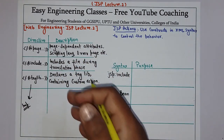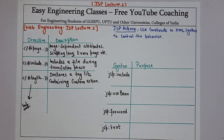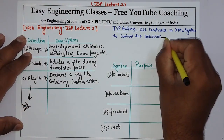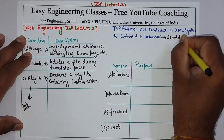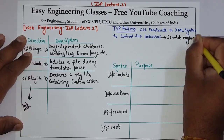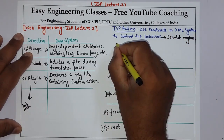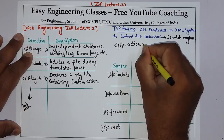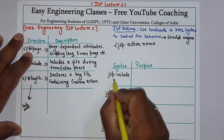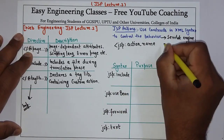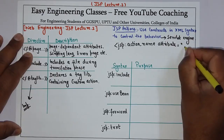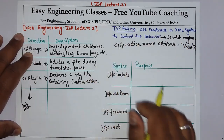Then we have JSP actions. JSP actions use constructs in XML syntax to control the behavior of the servlet engine. The syntax of a JSP action specifies the action — like include, useBean, or forward — followed by the attribute and the value of that attribute.